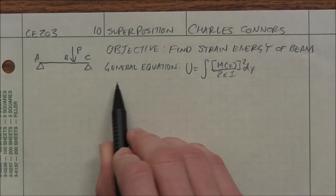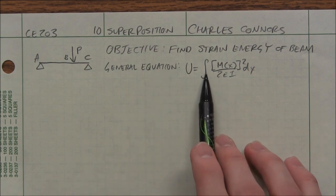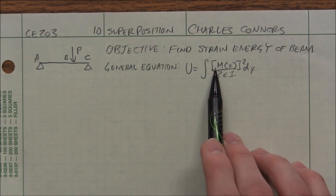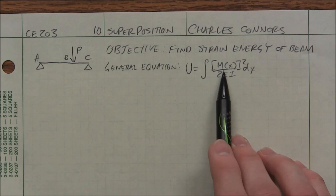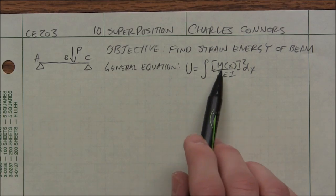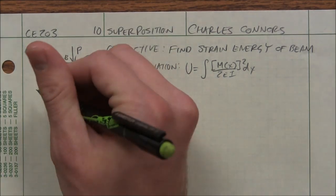Okay, so remember a general equation for strain energy is the integral of our moment equation squared over 2EI. In order to get our moment equation, we just need to do that statics first.